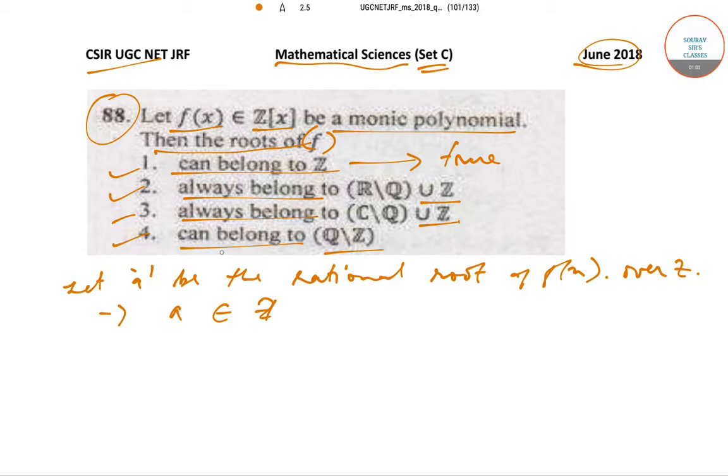For option 4, we say that A does not belong to Q\Z, which means option 4 is false. Therefore, option 1 is true and option 4 is false.